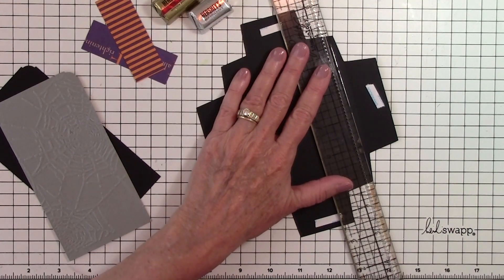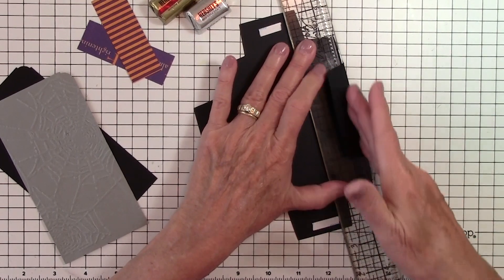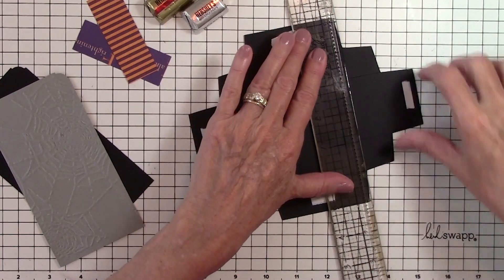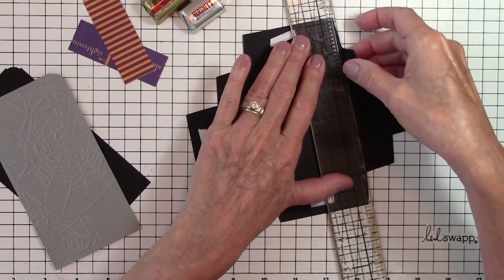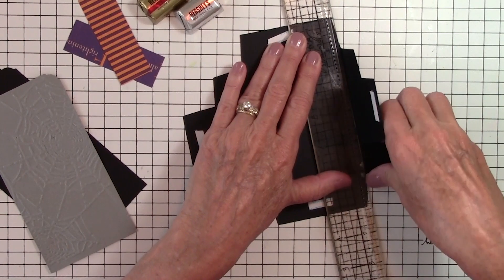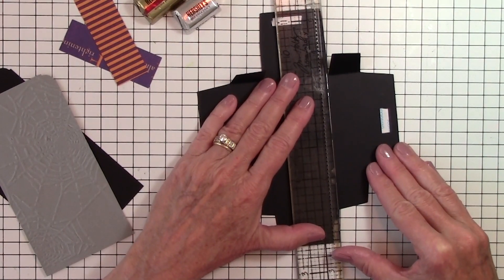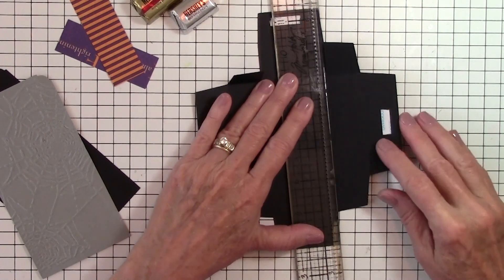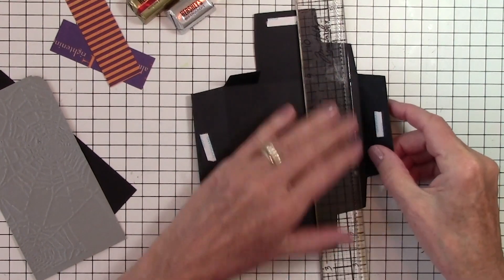Then if you take a ruler or some sharp edge and put it on these two spots, that's where your score is. You can fold it up. I'm going to do that on all sides. When we do this, it's a nice crisp edge. I'm going to go over here and do the same again.